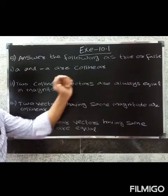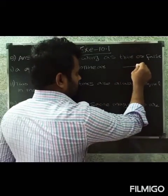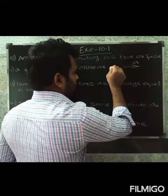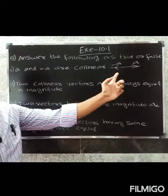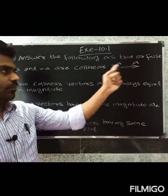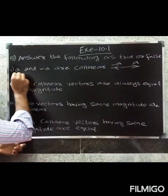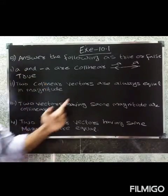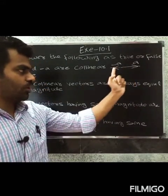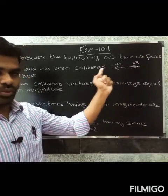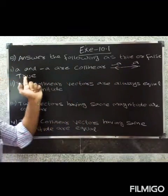Collinear means parallel. For example, vector a is here and minus a is here. These two are collinear — they are parallel to the same line. Therefore, the condition is true. Vector a and minus a are on the same line, so that's the collinear, or parallel, condition. It is true.